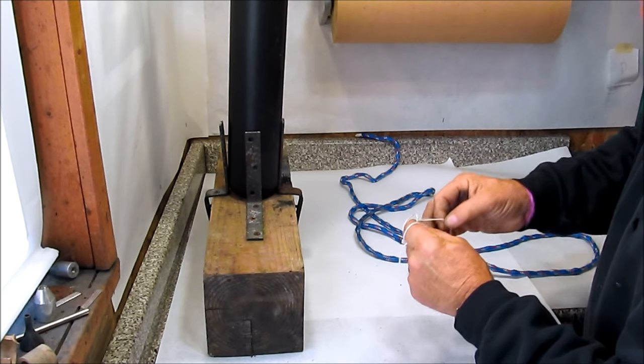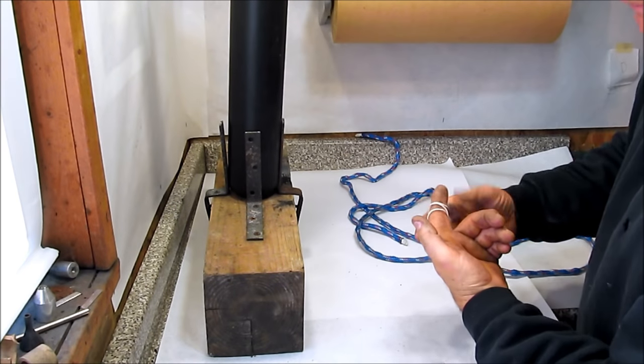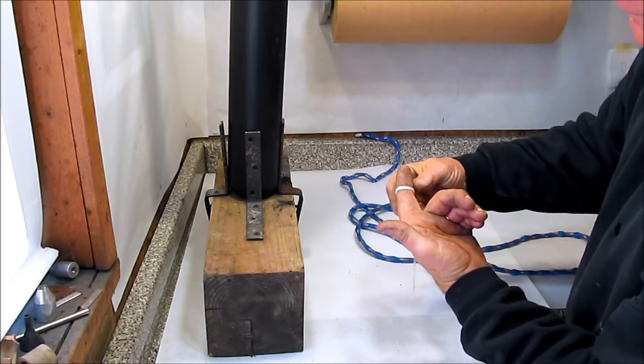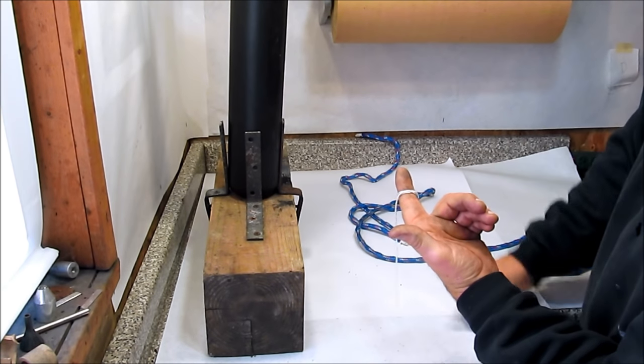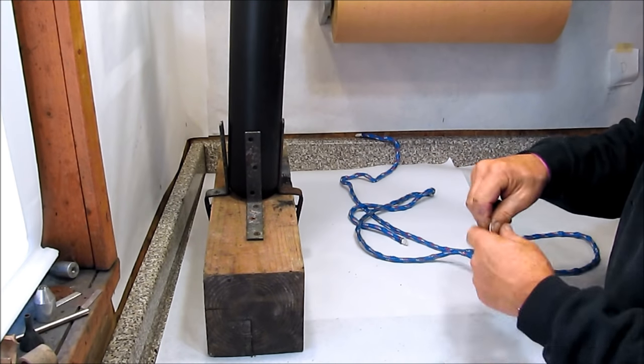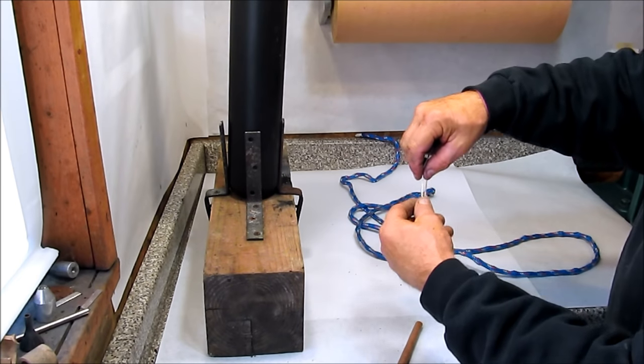Easier said than done with dry fingers. It's easier to do with two hands tying it around something. But there, I've got a clove hitch that can then be secured with an overhand knot. Once again, sitting there and over and over and over, practicing the first method.